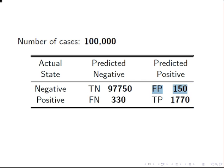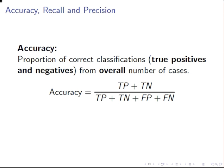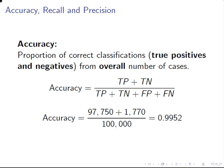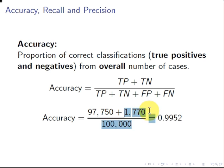Accuracy is the proportion of correct classifications — true positives and true negatives — from the overall number of cases. We had 97,750 true negatives and 1,770 true positives. The answer is 0.9952, so 99.52% accuracy with this classification system.